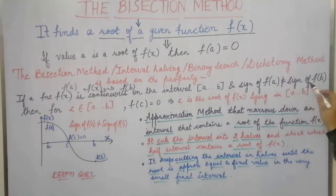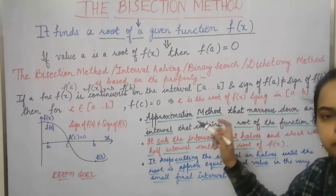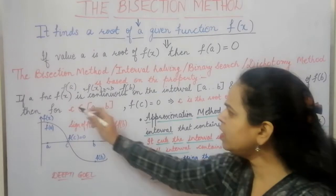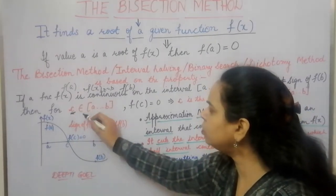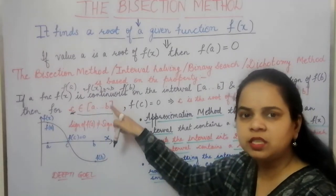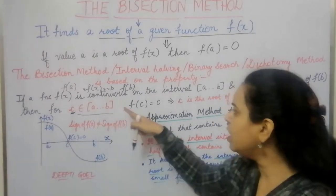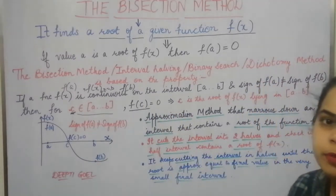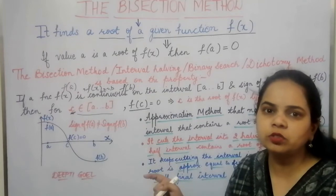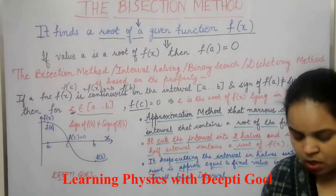This is the mathematical property: if f(x) is continuous on [a, b] and the sign of f(a) is not equal to the sign of f(b) — meaning one is positive and the other is negative — then there exists some value c lying in the interval [a, b] for which f(c) equals 0. That value c for which f(c) equals 0 is called the root of the equation.